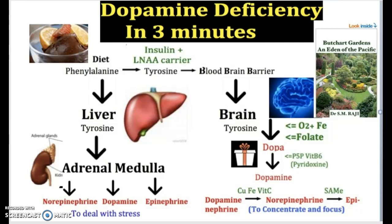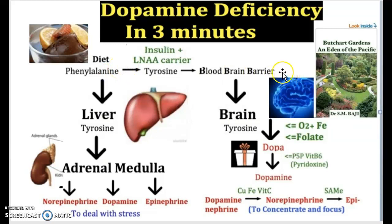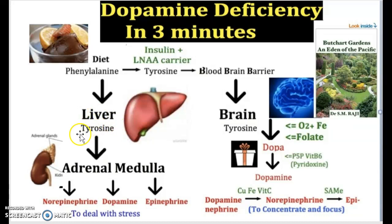Now that we understand what monoamines are, we can understand how they are created through diet and used by the body. When food enters the body, a substance called phenylalanine is created, and it can take two trajectories: one toward the brain and one toward the liver. The first trajectory directed toward the liver converts phenylalanine into tyrosine.